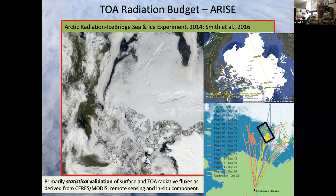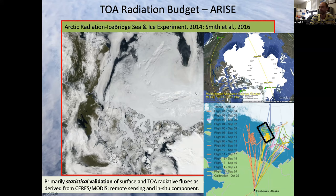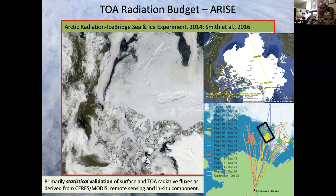ARC-6 grew out of the ARISE field mission, led from NASA Langley in 2014, based out of Fairbanks, Alaska, flying over the Beaufort Sea in partnership with Operation IceBridge. The radiation budget part used a statistical validation approach — flying grid-box lawnmower patterns over 100 km × 100 km areas to define average radiative flux values for comparison with satellite data products.